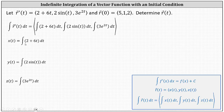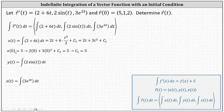The integral of 2 plus 6t with respect to t equals 2t plus 6 times t squared divided by 2 plus the constant c sub 1, which simplifies to 2t plus 3t squared plus c sub 1. We determine c sub 1 using r of 0 equals the vector 5, 1, 2. Since the x component is 5, x of 0 must equal 5. Substituting 0 for t gives 0 plus 0 plus c sub 1 equals 5, so c sub 1 equals 5. The x component of r of t is 2t plus 3t squared plus 5.